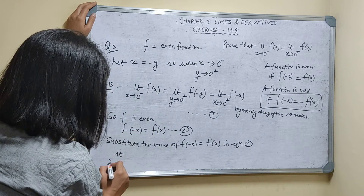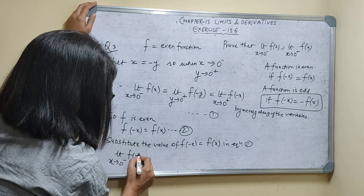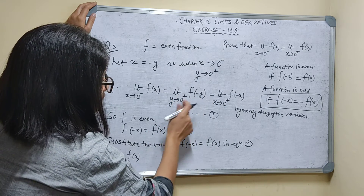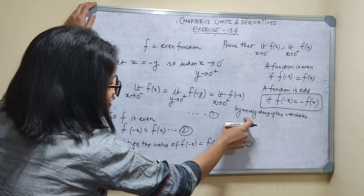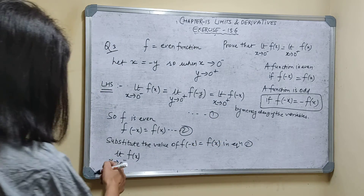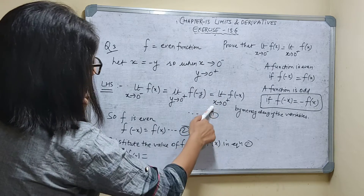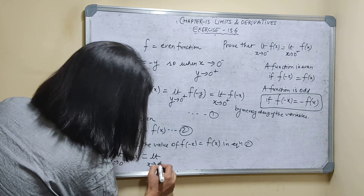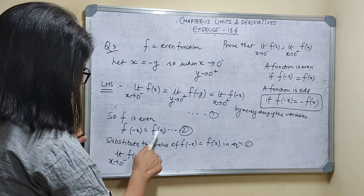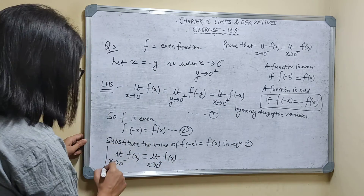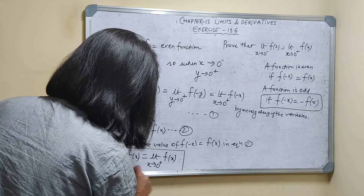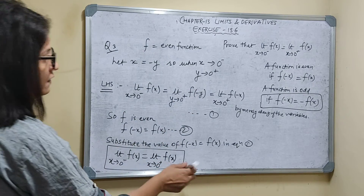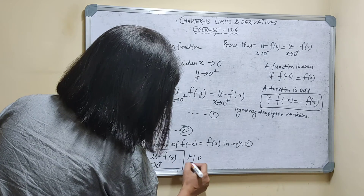Substituting into equation 1: limit as x tends to 0 minus of f(x) is equal to limit as x tends to 0 plus of f(minus x), and f(minus x) is written as f(x). So limit x tends to 0 minus of f(x) is equal to limit x tends to 0 plus of f(x). This is exactly what we had to prove. Hence proved. Thank you.